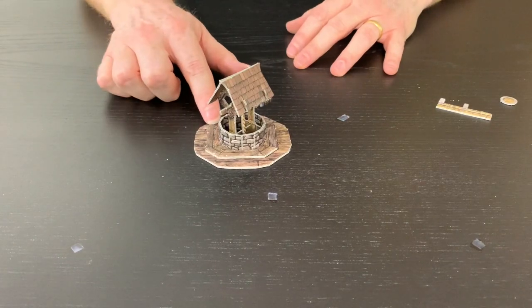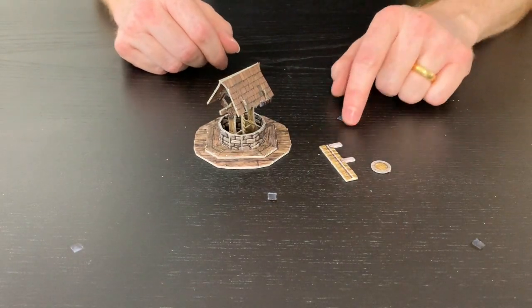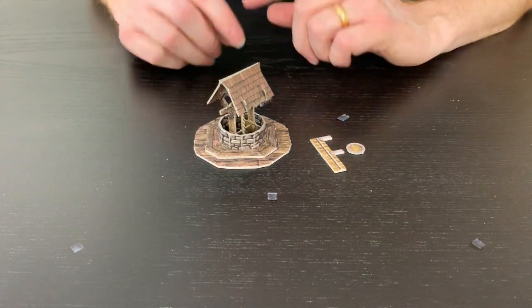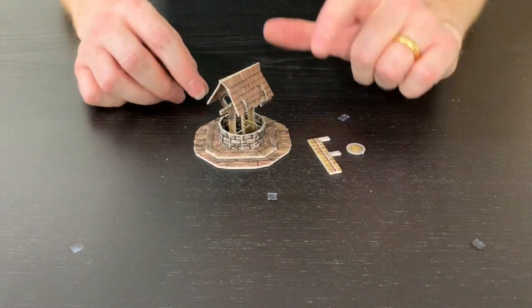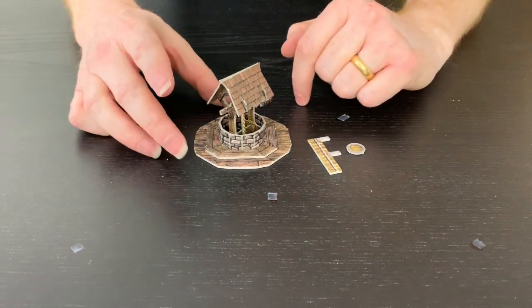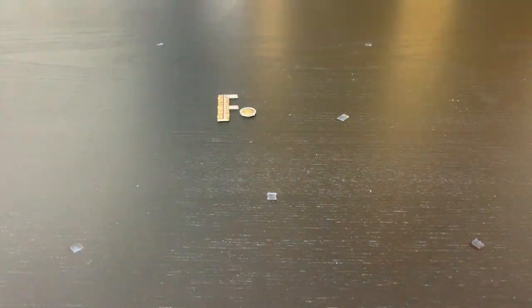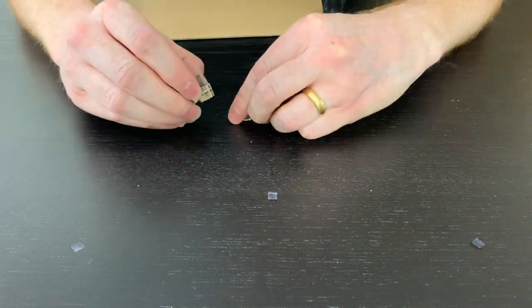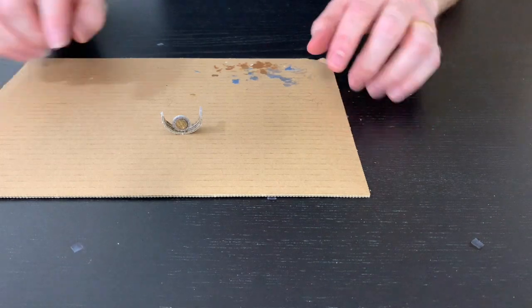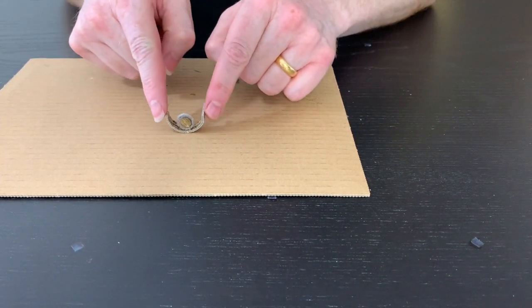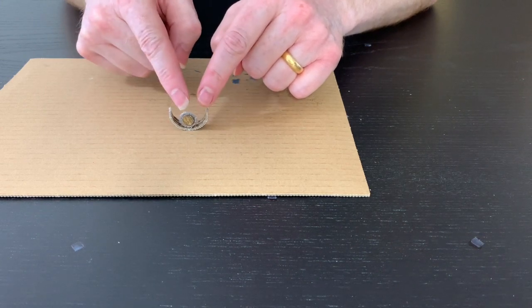The reason I say that as well is because you've got this little bucket here. Like all of our barrels, it assembles the same way, and those do require a little dab of glue. So I'll just do that quickly now. Just like the barrels on the dedicated scatter terrain video, I glue this part in here and then just let it set.